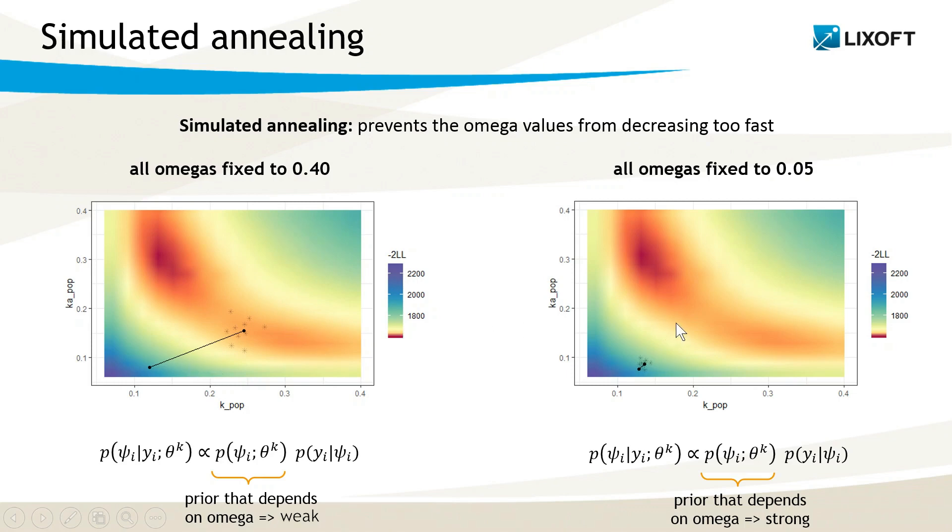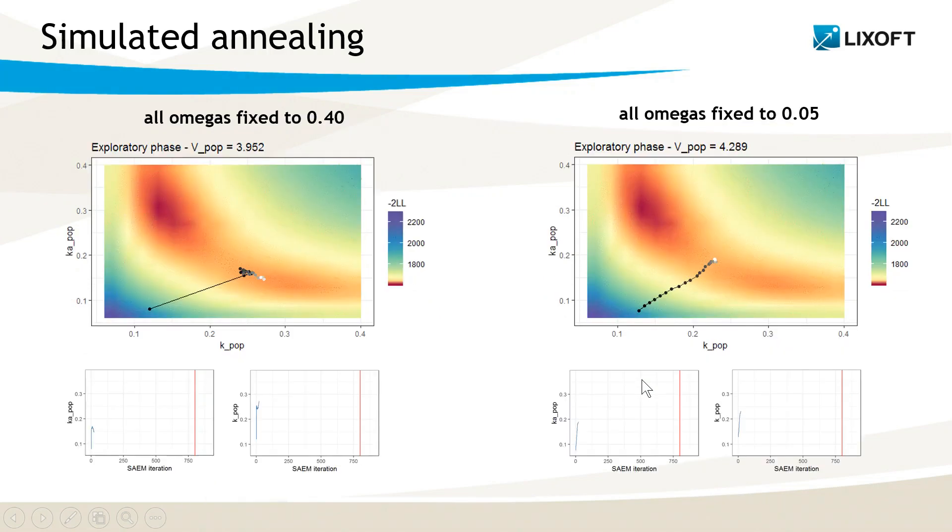On the opposite, if omega is small, the prior is strong, and the individual parameters will stay close to the population parameters of the previous iteration. If we look at the entire SAEM procedure, we see that with small omegas we move more slowly but also with less noise compared to the case with large omegas.